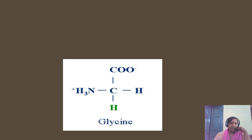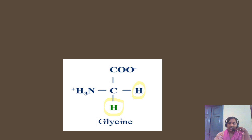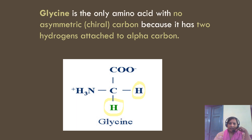Glycine is the only amino acid which lacks a chiral carbon atom. This is because the three groups common to all amino acids — the amino group, carboxylic acid group, and hydrogen atom — are present, and in glycine the side chain is also a hydrogen atom, meaning there are two hydrogen atoms attached to the alpha carbon, which is why it is not a chiral carbon.